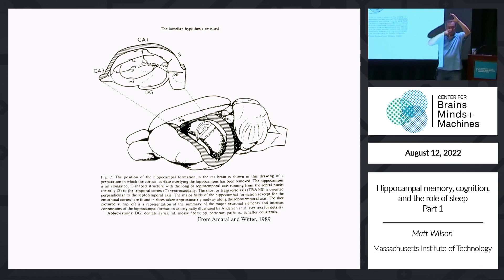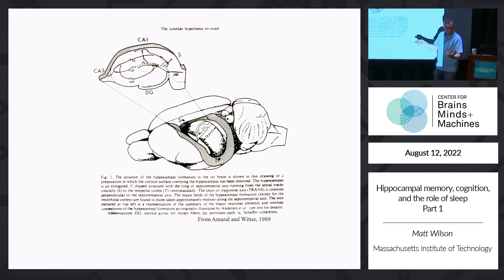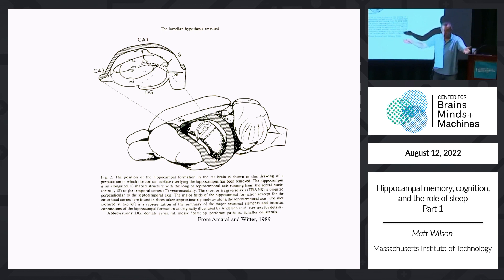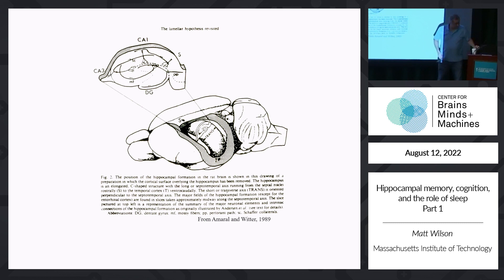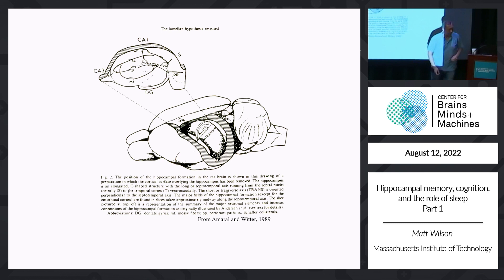The neocortex has multiple layers where the entorhinal cortex both sends input in and receives it back, communicating between layers. What would be the function of a circuit like this—evolutionarily conserved, but simpler than neocortical networks? In deep learning, more layers means more powerful computation. Yet here you have this archicortex with like one layer. What can it do? And why keep this circuit around when others evolved with greater heterogeneity? The hippocampus remains relatively unchanged—largely the same circuitry from rodent to human.